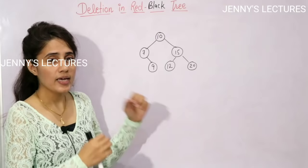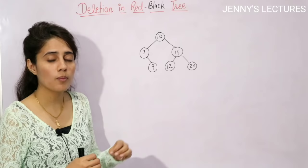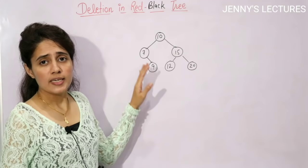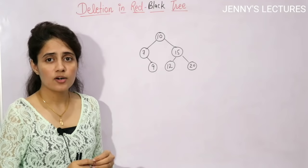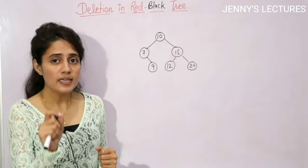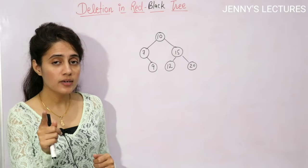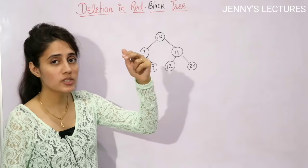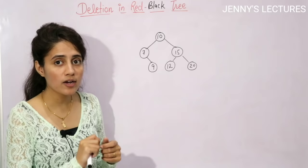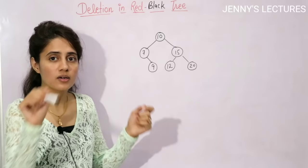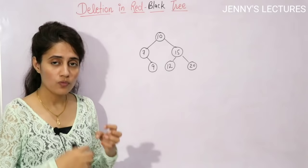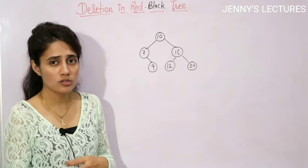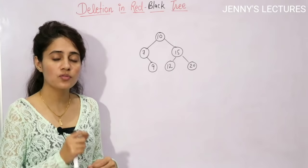In deletion, which property gets violated? If you delete a red node, there is no problem — just delete it and exit. But if you delete a black node, the property that every path must have the same number of black nodes will be violated. To resolve this, you may need rotations or recoloring. We will see all cases.